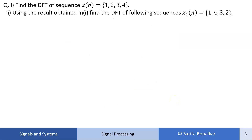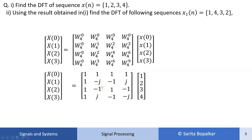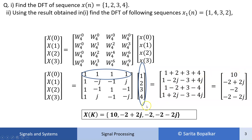Now let us solve one example. Find the DFT of sequence x[n] = {1, 2, 3, 4}. Second part: using the result obtained in part 1, find the DFT of sequence x1[n] = {1, 4, 3, 2}. First, we find the DFT of x[n] by the matrix method: X[k] equals the twiddle factor matrix multiplied by x[n]. Putting in the values and performing the matrix multiplication, we get X[k] = {10, -2+2j, -2, -2-2j}. This is the DFT of x[n] obtained by the matrix method.